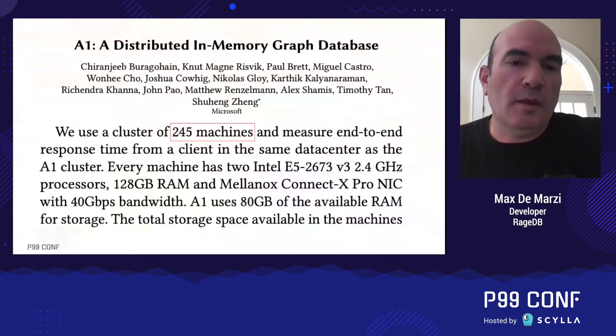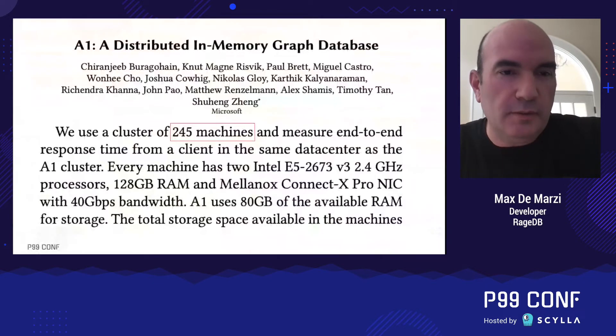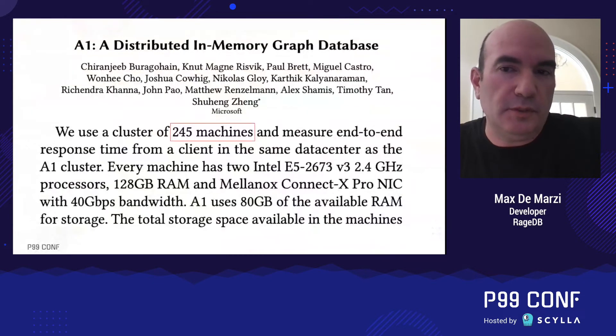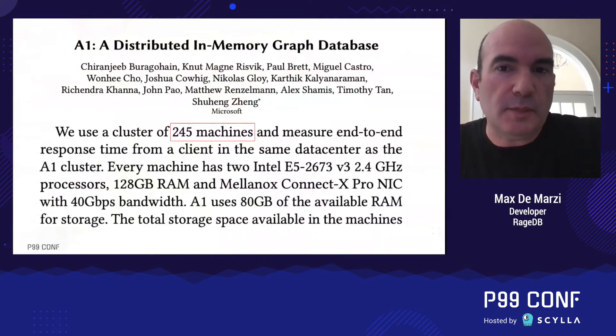Before I begin our tale, I want to start off with a sad story about outrageously bad performance. Once upon a time, back in 2020, some folks at Microsoft built a distributed graph called A1. The details are in the paper — I'm going to skip them for now and jump right into the performance test.